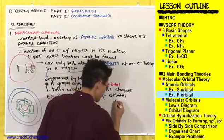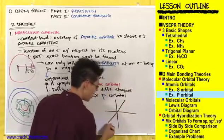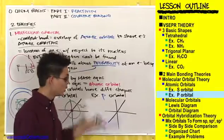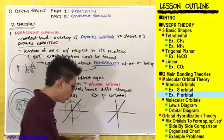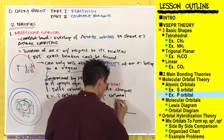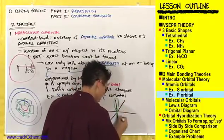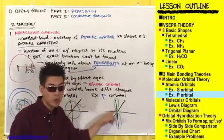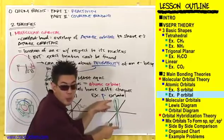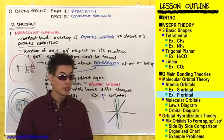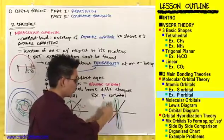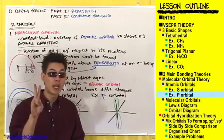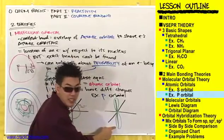If you drew these out on some 3D graph paper with X, Y, and Z axes, what a P orbital would look like is lobes. This is actually just one P orbital. A lot of people think there are two separate orbitals, but a P orbital consists of two halves — this is one half and this is the other half. Together they are one P orbital.